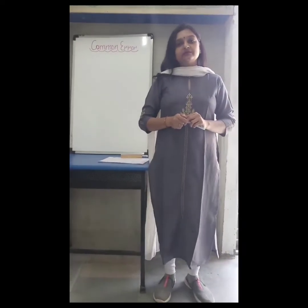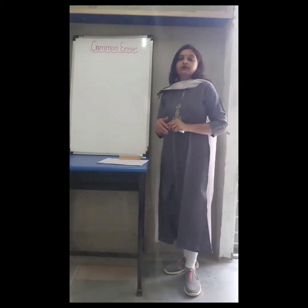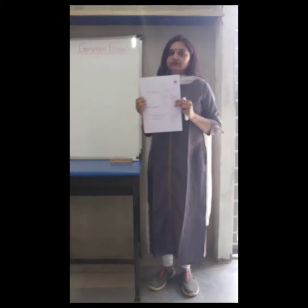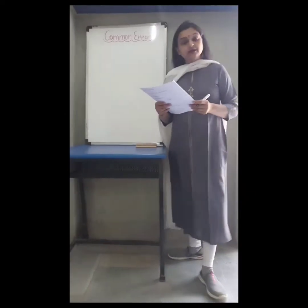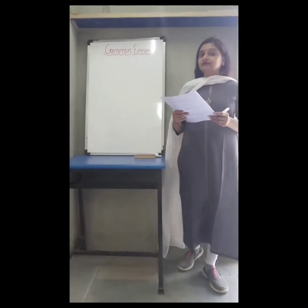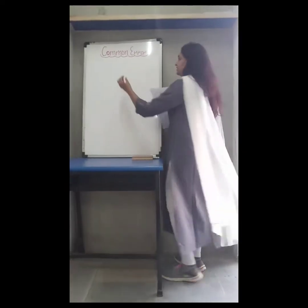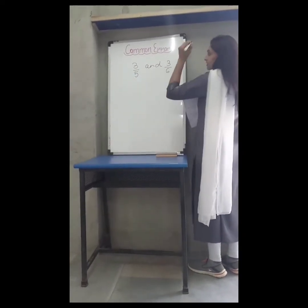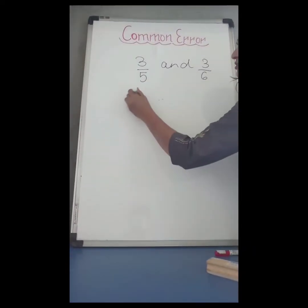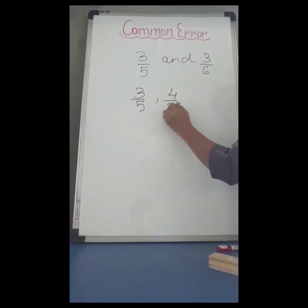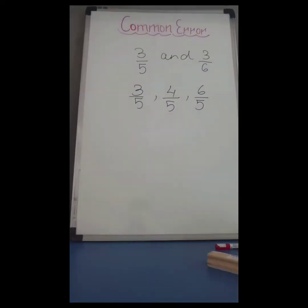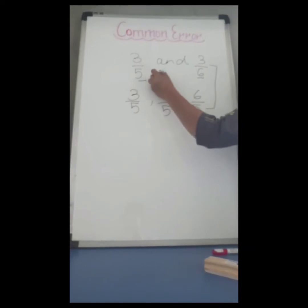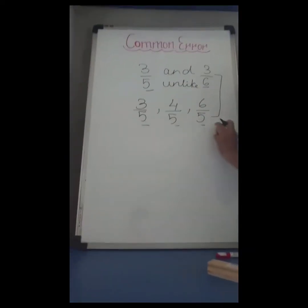In fractions, students get confused in understanding like fractions and unlike fractions. For example, 3 upon 5 and 3 upon 6 — which type of fraction is this? Unlike fractions. Now suppose 3 upon 5, 4 upon 5, 6 upon 5 — which type of fractions are these? These are like fractions. So this is the difference: when denominators are different, these are called unlike fractions, and when denominators are the same, they are known as like fractions.